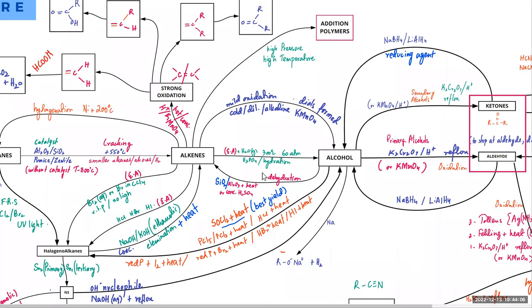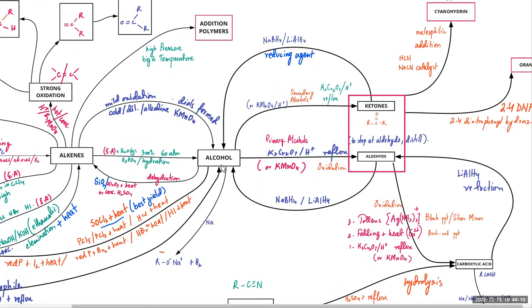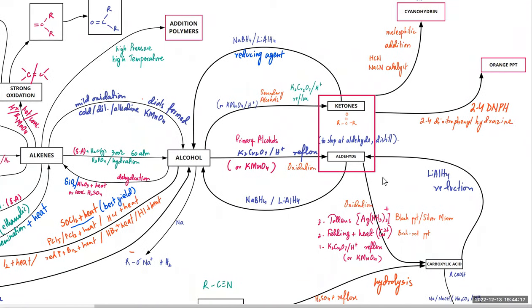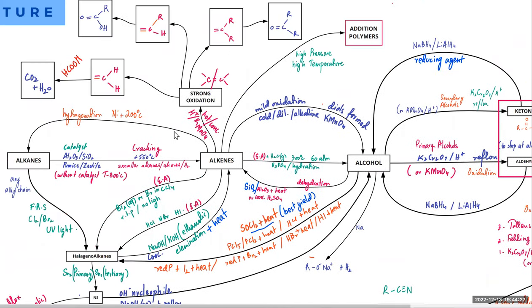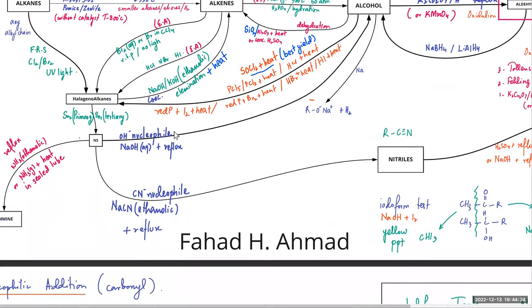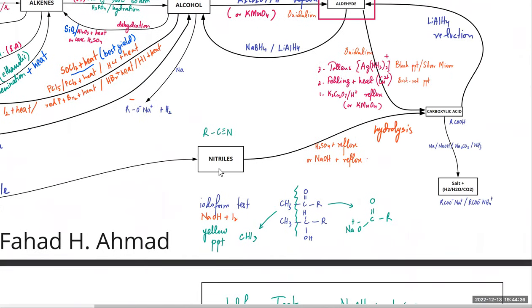The oxidation - what happens if you have an alcohol and you oxidize it: if it's a secondary alcohol it will turn into a ketone; if it's a primary alcohol it will turn into an aldehyde, and that aldehyde will get further oxidized to carboxylic acid. It can be reduced back to an aldehyde. Nitrile hydrolysis gives carboxylic acid - so 80% is the chart and 20% is mechanisms and details.